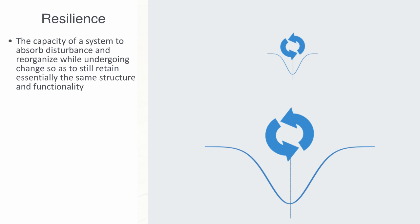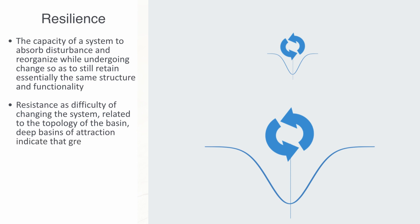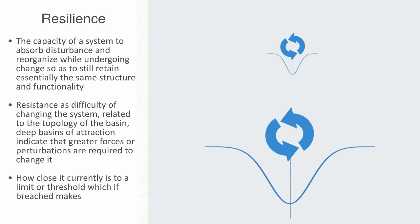We can talk about resistance as the ease or difficulty of changing the system. This is then related to the topology of the basin. Deep basins of attraction indicate that greater forces or perturbations are required to change the current state of the system away from the attractor. Within this model, we can talk about the precariousness of a system, which would correlate to the current trajectory of the system and how close it currently is to the limit or threshold which, if breached, makes recovery difficult or impossible.